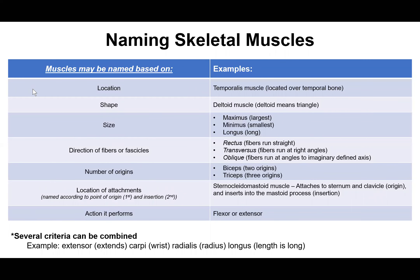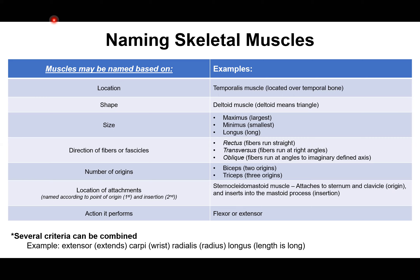Now we can talk about how we name skeletal muscle — there are a lot of different factors that come into play. Muscles can be named based on their location; for example, the temporalis muscle is located just over the temporal bone. They can be named based on their shape — the deltoid muscle, for instance, literally means triangle, and the deltoid muscle is triangular in shape. They can be named based on their size: if a muscle has the term maximus in it, like gluteus maximus, that means it's the largest muscle of that group — there's the gluteus maximus, medius, and minimus.